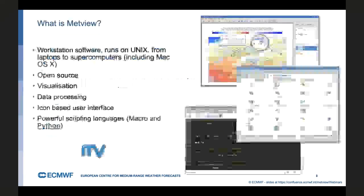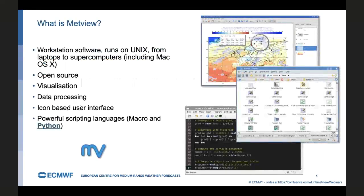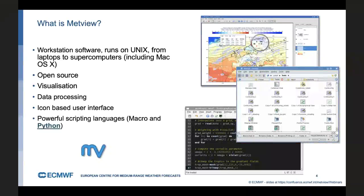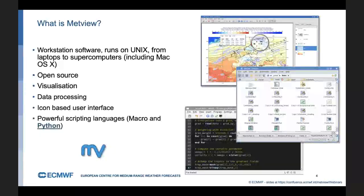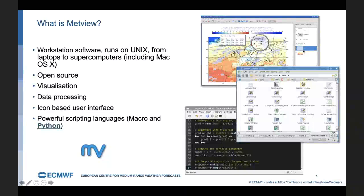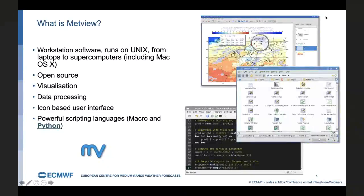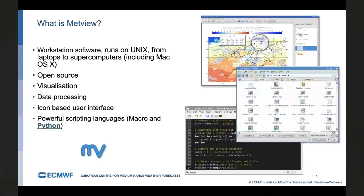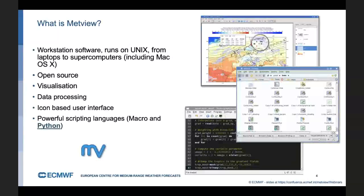So we use Metview. What is Metview in a nutshell? It's a workstation software running on various flavors of Unix. Now it runs on Mac OS X as well. Metview is open source. It offers us visualization, data processing, and it has a nice icon-based user interface as you can see in the snapshots. But more importantly, it has a script language interface. It has its own language called Macro, and it has a Python interface, which we will use in the current webinar.